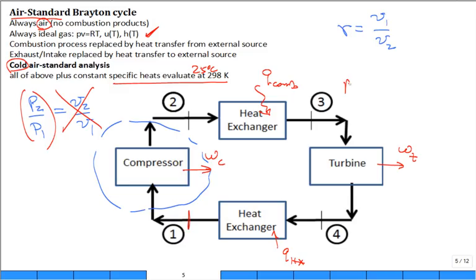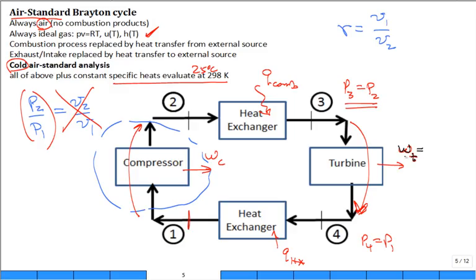Now we want to do a first law analysis for all the Q's and W's. We assume negligible change in kinetic and potential energy, steady-state operation, and no heat transfer around the turbine — just work transfer out. The specific work out of the turbine is W_T = h3 − h4. For the combustor, Q_in = h3 − h2. The heat rejection at the heat exchanger is Q = h1 − h4, which will be negative since h1 < h4. The compressor work is W_C = h1 − h2, also negative.